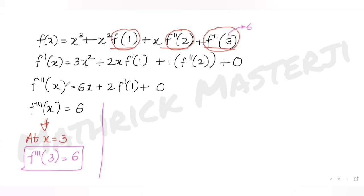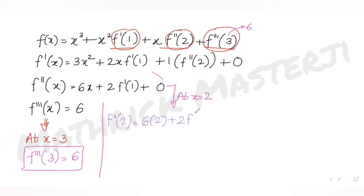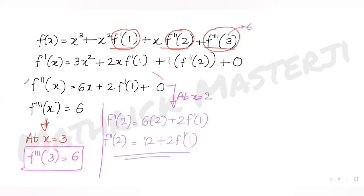Now for f''(2): the second derivative at x = 2 gives f''(2) = 6·2 + 2·f'(1) = 12 + 2·f'(1). So the second derivative at x = 2 is expressed in terms of the first derivative at x = 1.